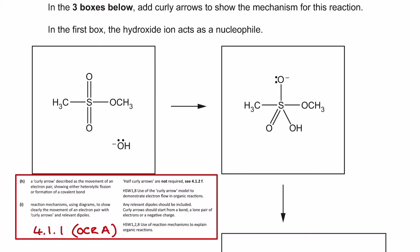Curly arrow mechanisms can be quite tricky at the best of times, but what's becoming even more popular in some exams, particularly on the OCR A specification, is asking you to predict curly arrows in an unfamiliar mechanism.